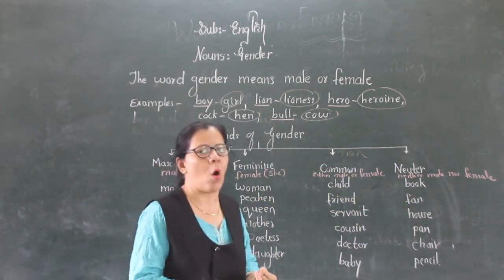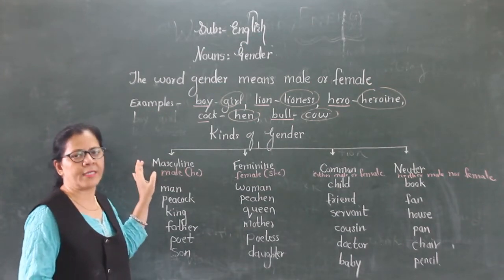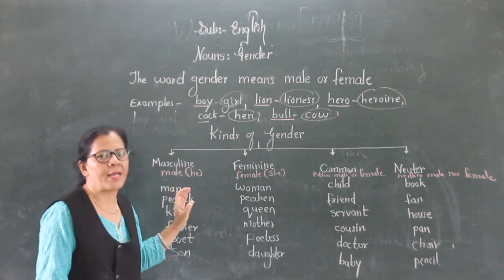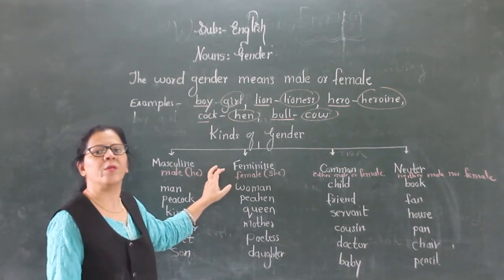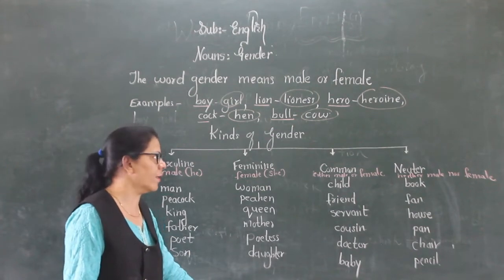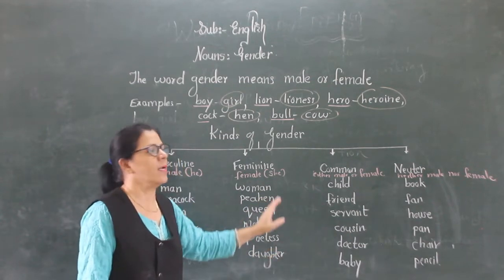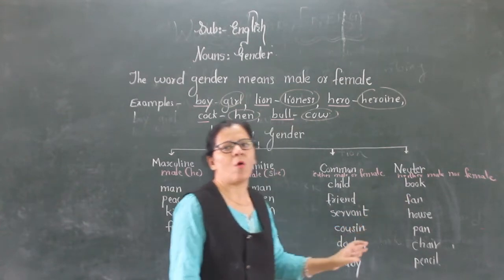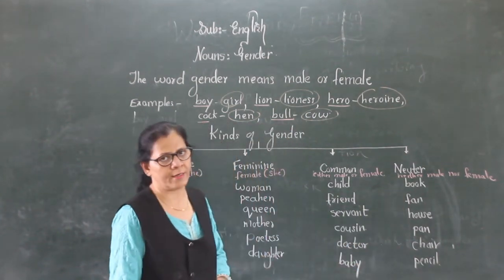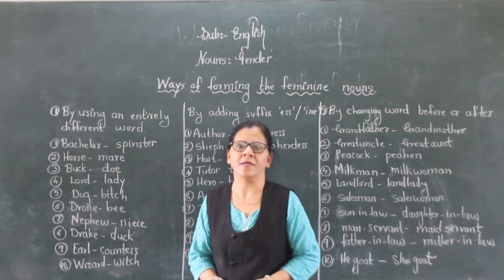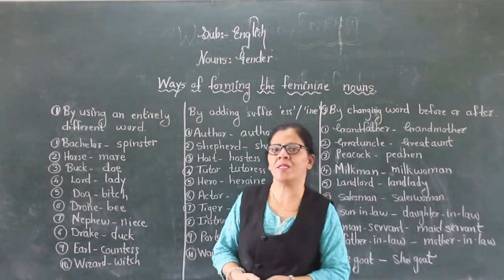First is masculine — a noun which denotes male is said to be in masculine gender. Feminine — the noun which denotes female is said to be in feminine gender. Common — the noun which denotes either male or female is said to be in common gender. And neuter — the noun which denotes neither male nor female is said to be in neuter gender. Now we are going to see the ways of forming feminine nouns.